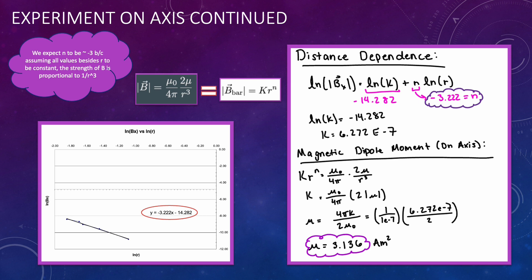I then calculate the magnetic dipole moment by setting the dipole moment equation on axis equal to the kr^n equation solving for mu to get 3.136 ampere meters squared.